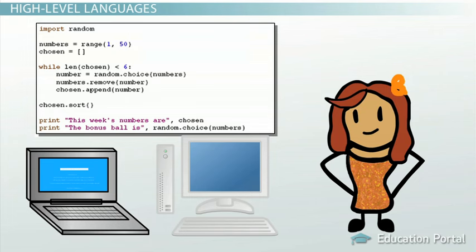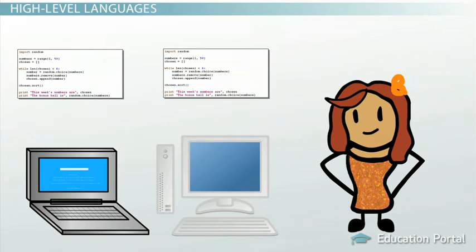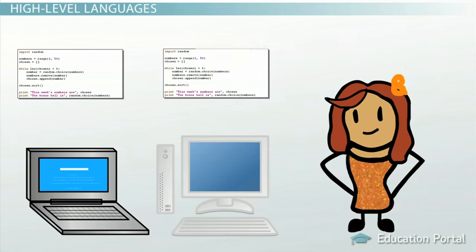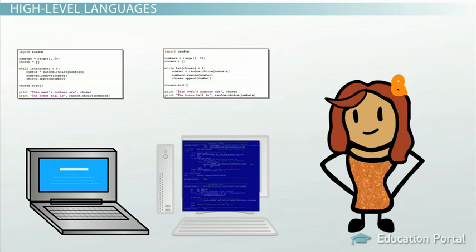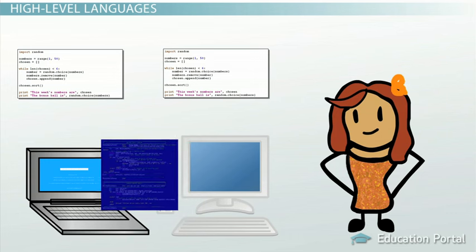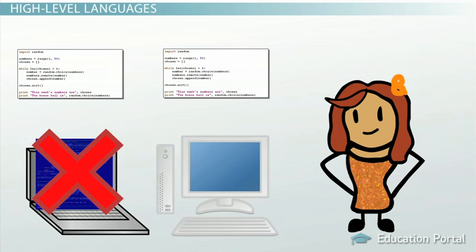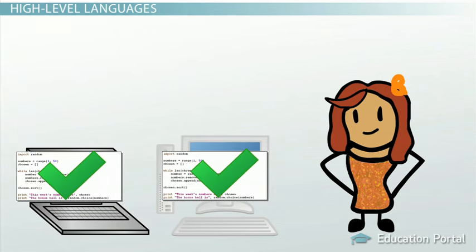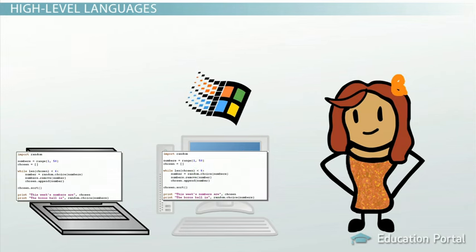The second advantage is that the code of most high-level languages is portable, and the same code can run on different hardware. Both machine code and assembly languages are hardware-specific and not portable. This means that machine code used to run a program on one specific computer needs to be modified to run on another computer. Portable code in a high-level language can run on multiple computer systems without modification. However, modifications may be necessary because of the operating system — for example, programs written for Windows typically don't run on a Mac.